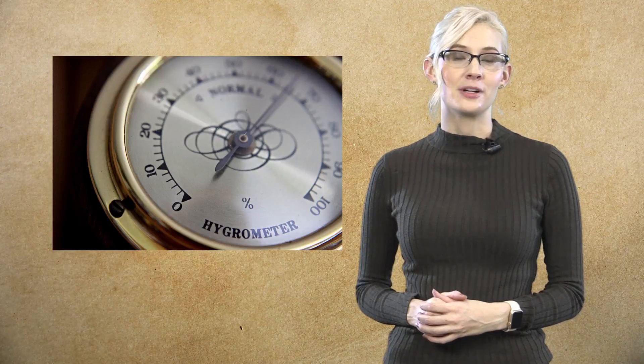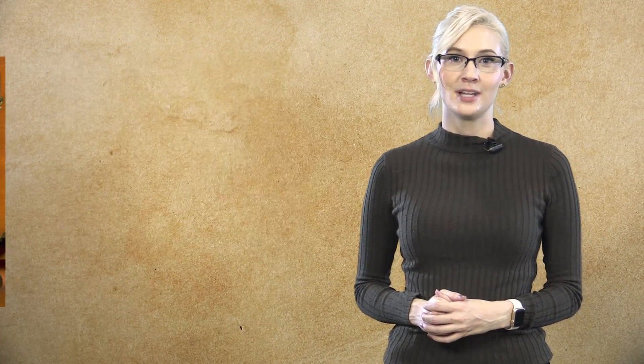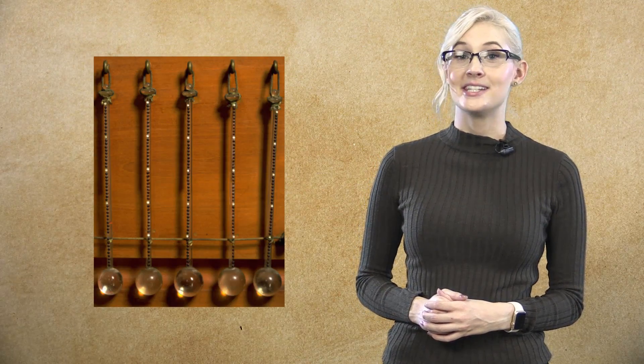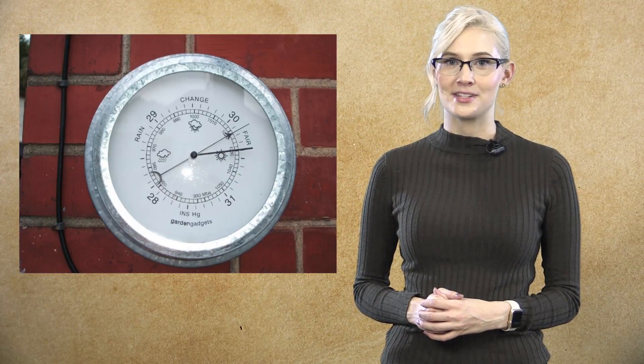Nicholas Cusa invented the hygrometer, a device which measures humidity, in the mid-15th century. Around 1592, Galileo came up with the early thermometer, and by 1643, a barometer measuring pressure was invented by Evangelista Torricelli.